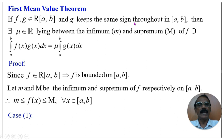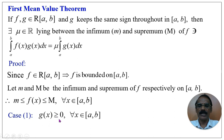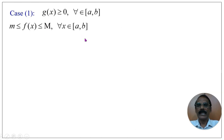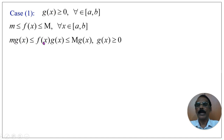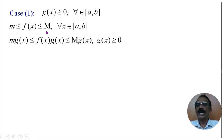Since g keeps the same sign throughout [a, b], we have two cases. Case 1: g(x) ≥ 0 for all x in [a, b], that is, g(x) is a non-negative function. When g(x) is non-negative, we multiply the inequality m ≤ f(x) ≤ M by g(x). Since g(x) is non-negative, there is no change in the inequality, and we get m·g(x) ≤ f(x)·g(x) ≤ M·g(x).